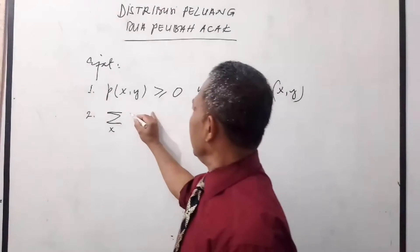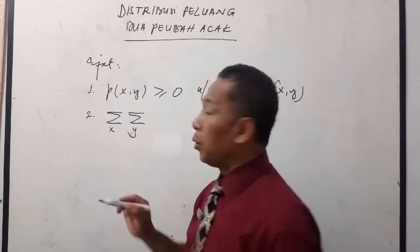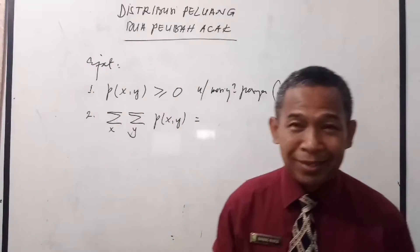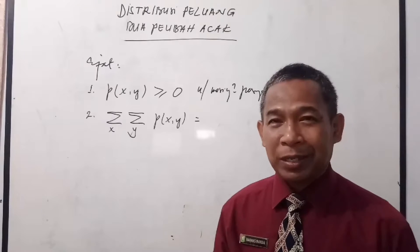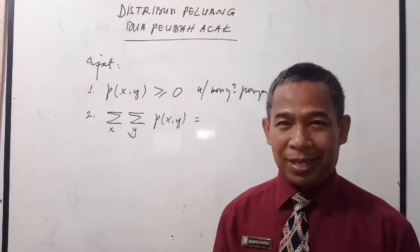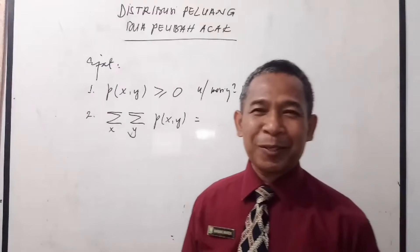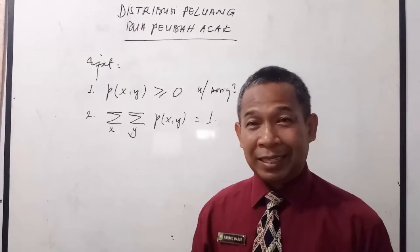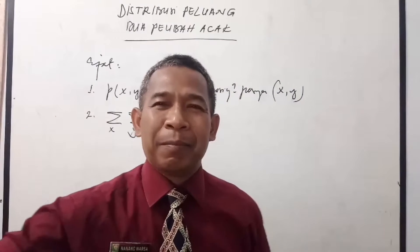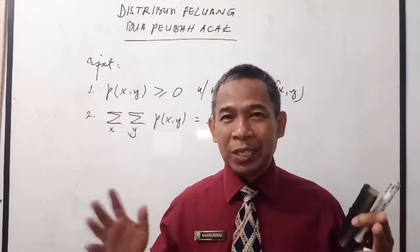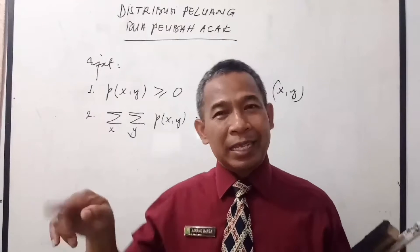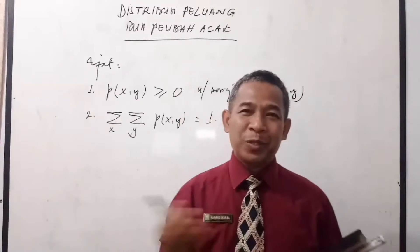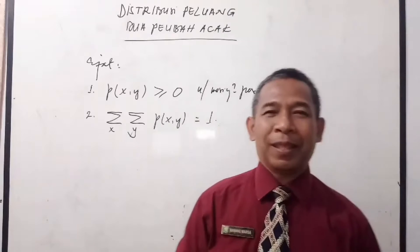Sifat yang kedua: karena yang kita pelajari adalah yang diskret, maka sigma untuk peubah acak X digabungkan dengan sigma untuk peubah acak Y dari peluang P(X,Y), kalau kita jumlahkan semuanya, harus bernilai 1. Peluang berkisar di antara 0 dan 1 — yang 0 kita sebut mustahil, sedangkan yang 1 itu pasti. Jadi peluang berada di antara kemustahilan dan kepastian.